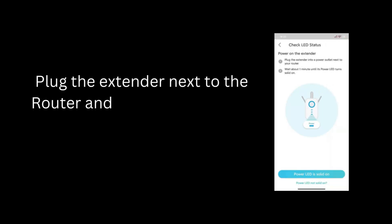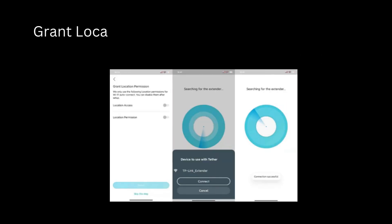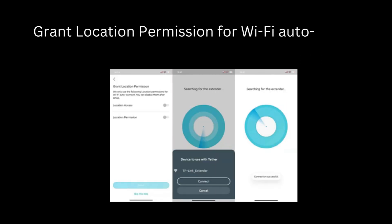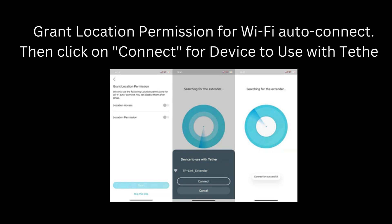Plug the extender next to the router and confirm the power light is solid on. Grant location permission for Wi-Fi Auto-Connect, then click on Connect for the device to use with Tether.